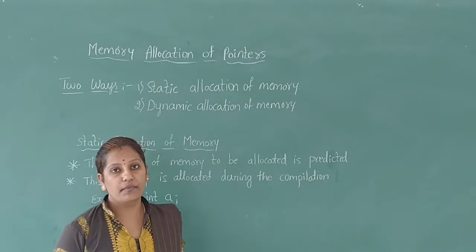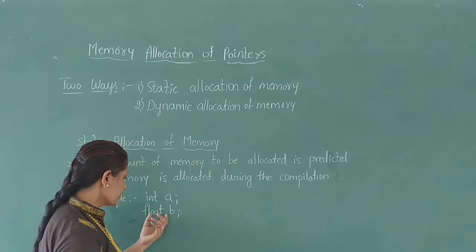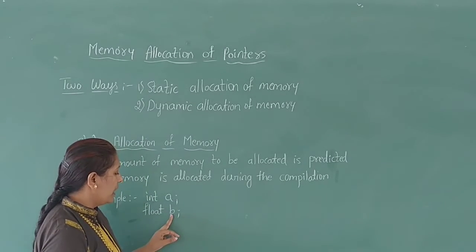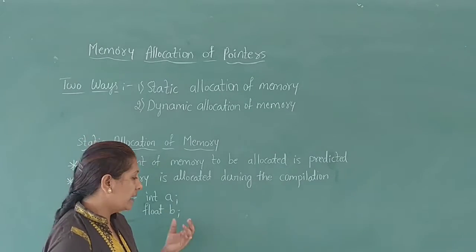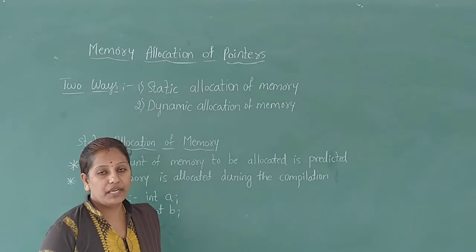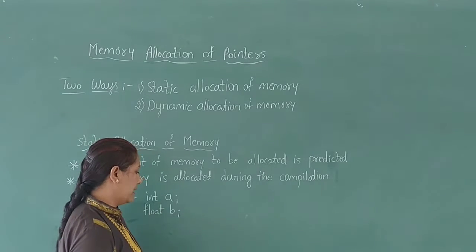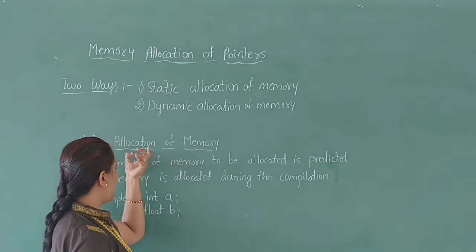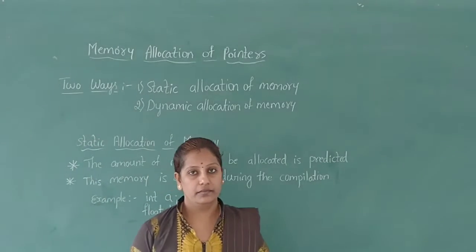Integer reserves two bytes of memory for a declared variable. Float B — B is a variable declared with data type float, and it allocates four bytes of memory space during the compilation time. This type of allocating memory is called static allocation of memory.